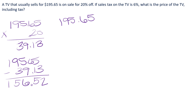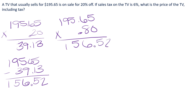You could also take the $195.65 and say: if it's 20% off out of 100%, then 100 minus 20 means you're only going to pay 80% of the original price. You multiply it times 0.8, and you also get $156.52. So both of those ways take you to the sale price.